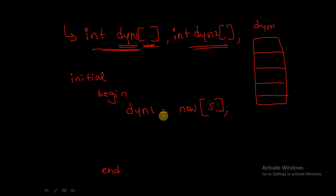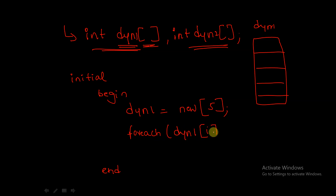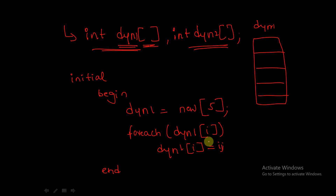Next, using a for-each loop: foreach(dyn1[i]) dyn1[i] = i. Let me explain how this for-each loop works and then we will come back to this step.